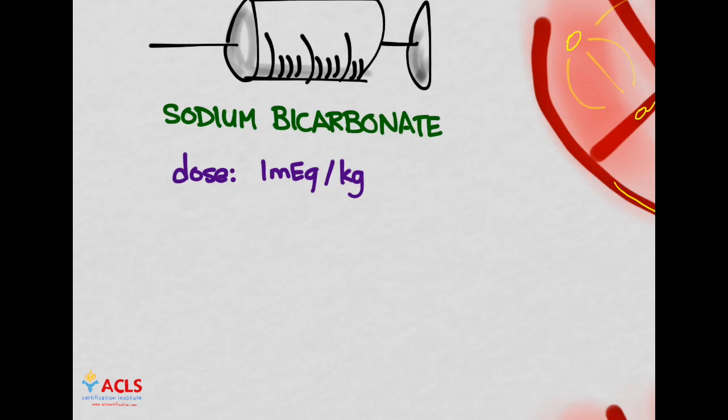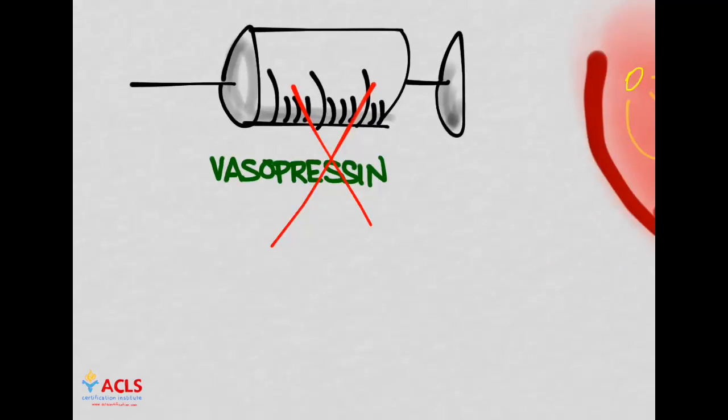The final drug is vasopressin. There's no evidence to suggest that we can make a recommendation for its use in children. We do use it in adults for the first or second dose as a vasopressor in pulseless arrest. But there's not enough evidence for children. In fact, there's some evidence saying maybe it's not so great in adults either. The preponderance of controlled trials in adults do not demonstrate a benefit.